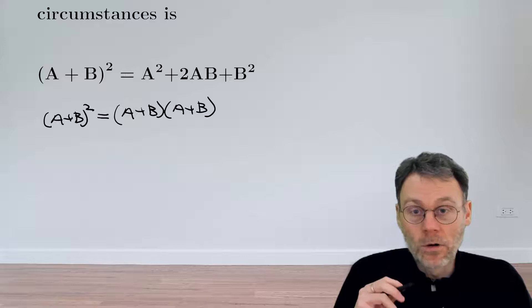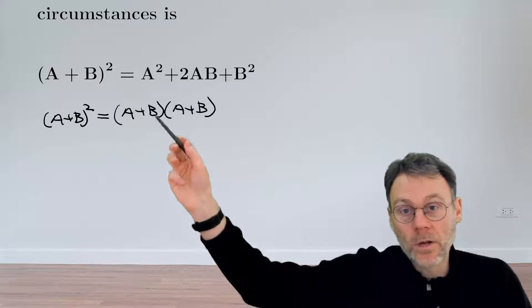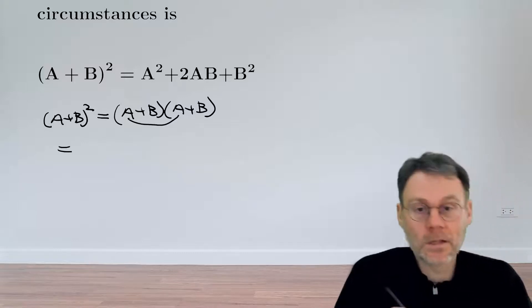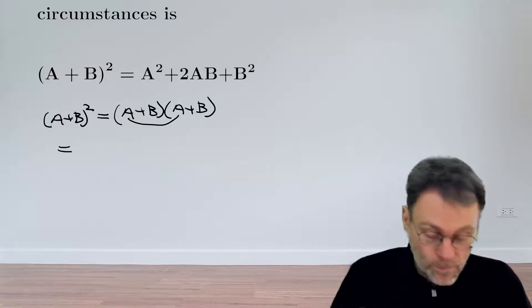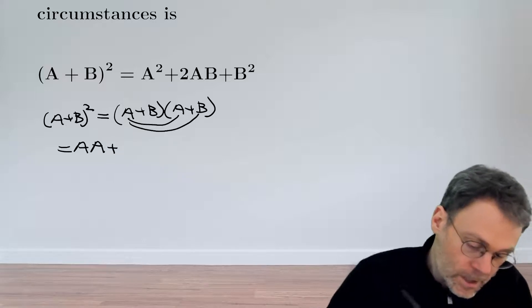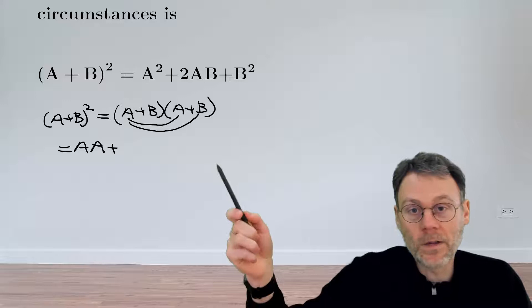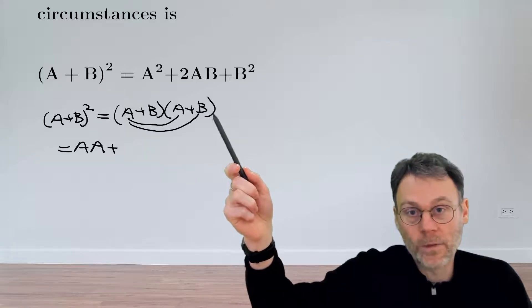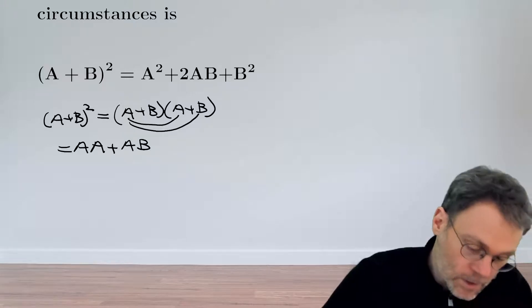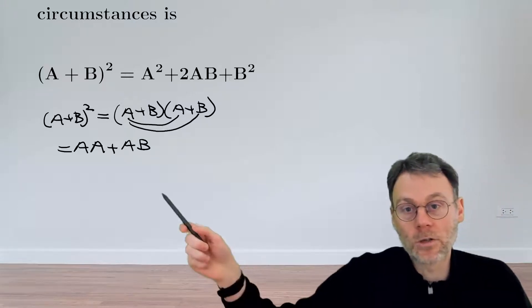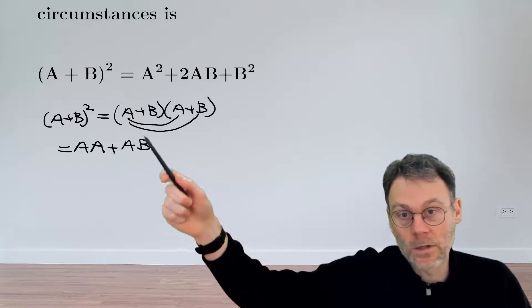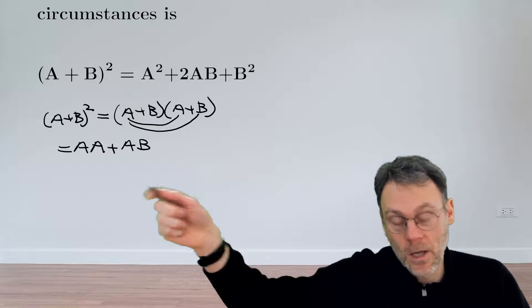These operators are linear, so we can linearly expand this product. First, we have A applied twice. Then we have the term where we first operate with B and then with A, written as AB, because operators evaluate from right to left—B is the first operator a function encounters from the right.